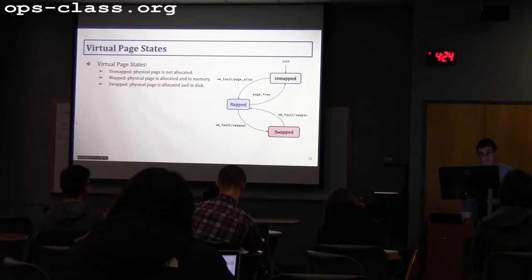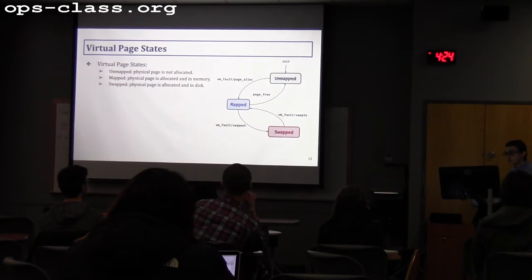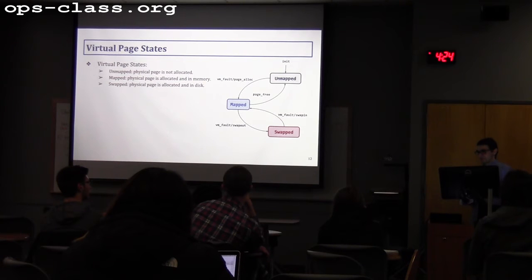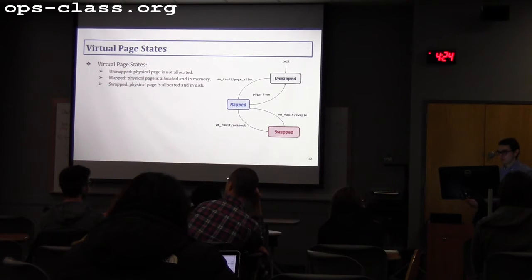Virtual pages have three states: unmapped, mapped, and swapped. Unmapped is the initial state for pages not yet allocated. The unmapped state is data-structure-dependent — with a linked list, you likely only need mapped and swapped states. With a two-level page table, if you use a table of structures and most entries have no valid physical page, you set those to unmapped. The key question for any implementation is: what states do you really need?